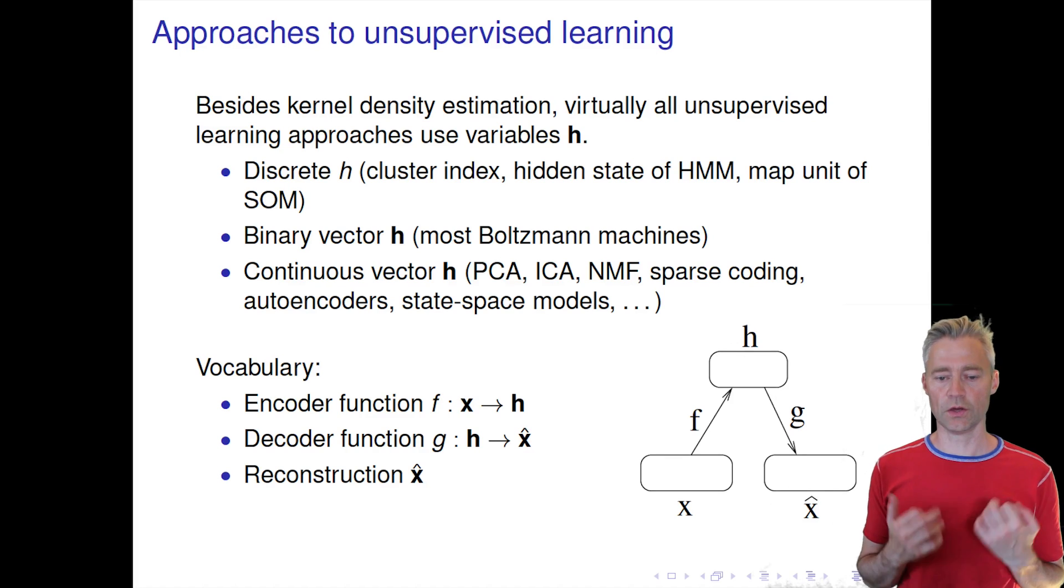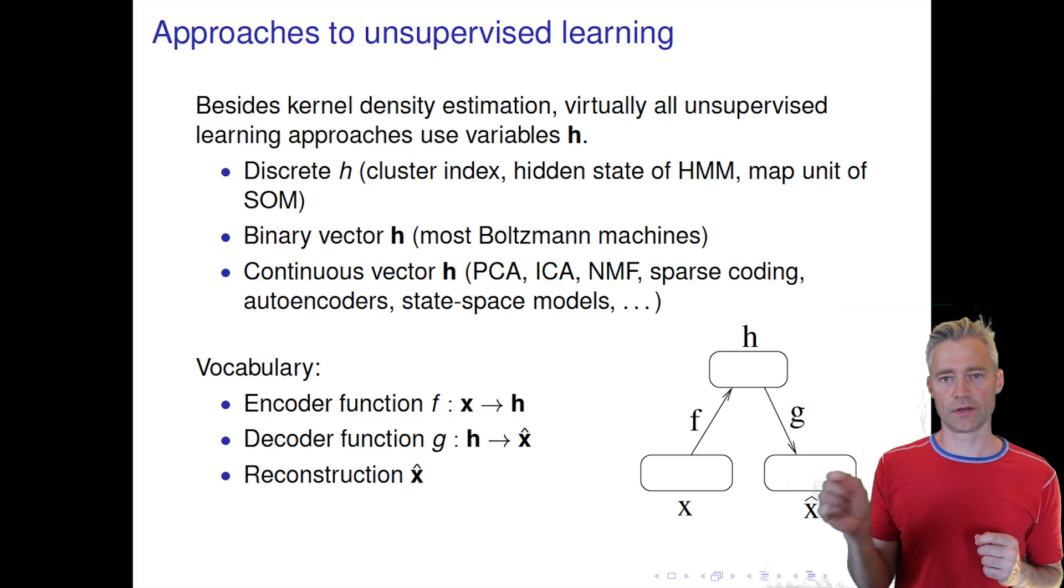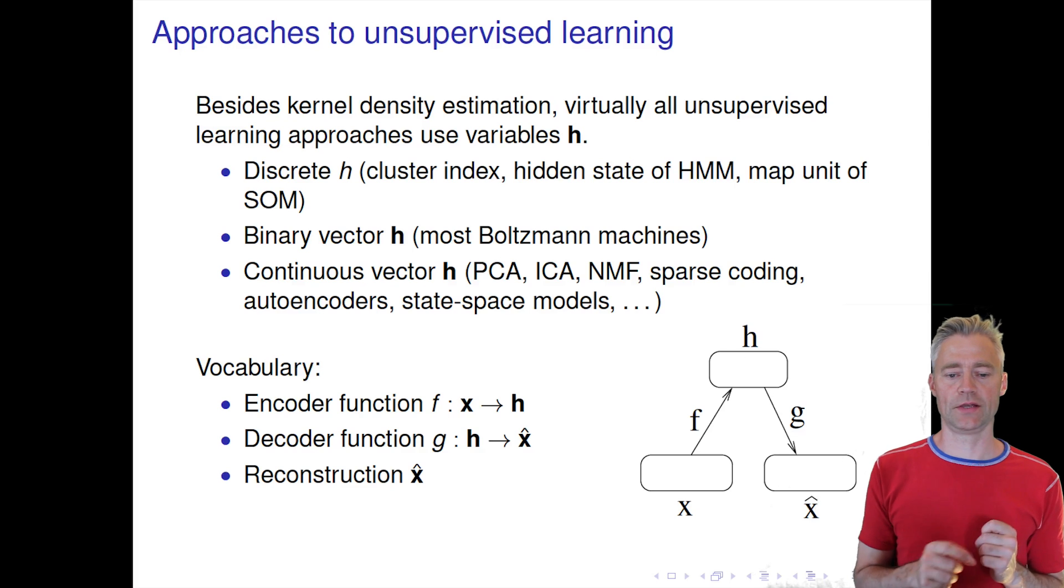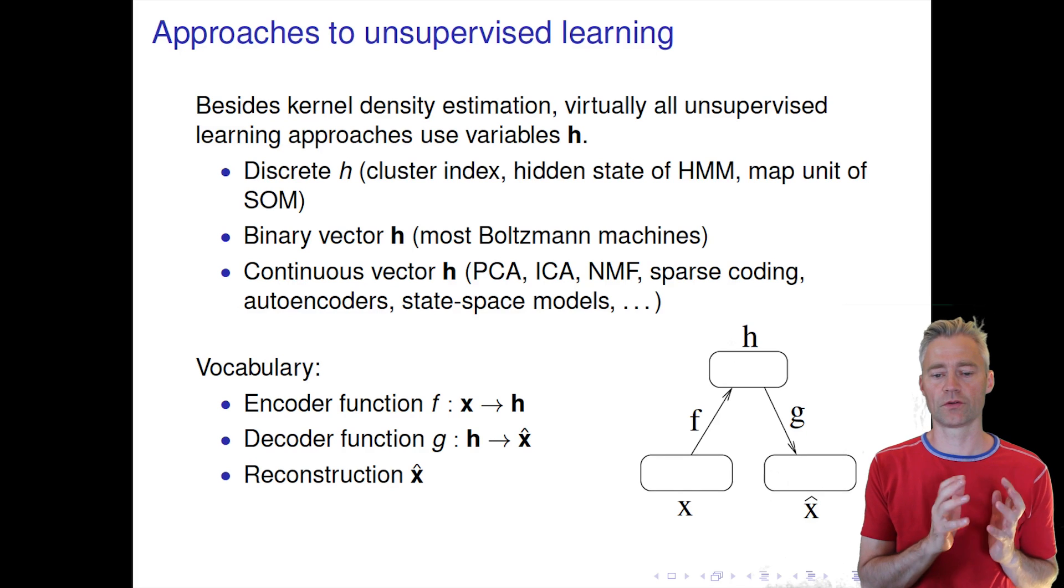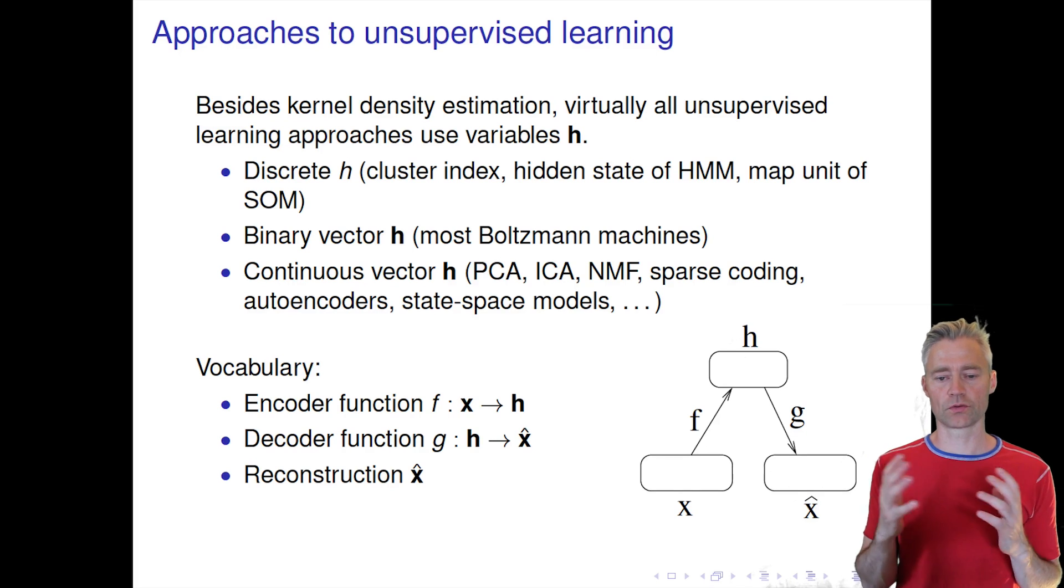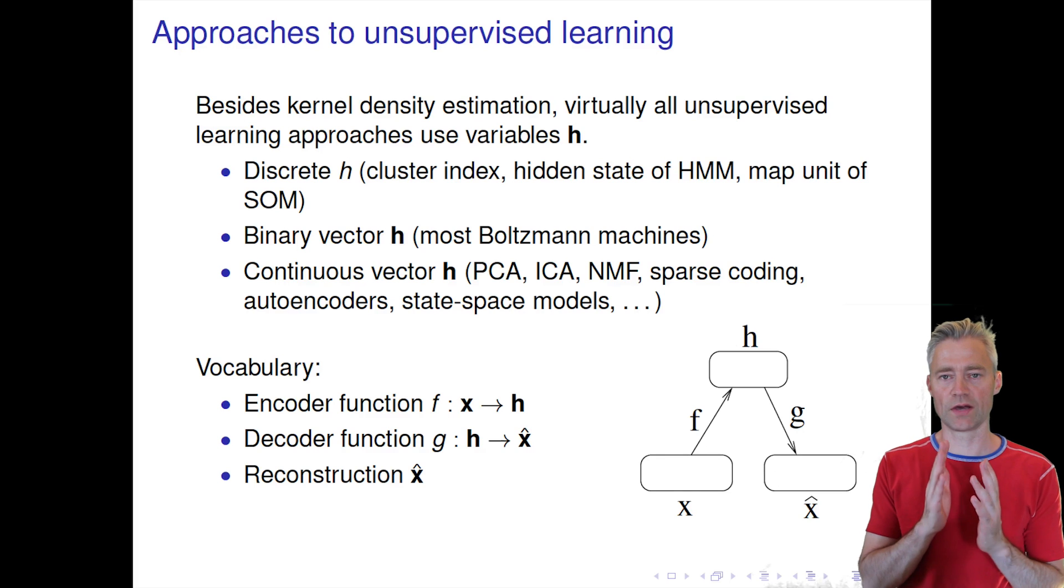If you have heard about clustering, for example, you can think about the cluster index, the cluster that one specific example belongs to, as the H. So then it's a discrete quantity. You can also think about a hidden Markov model, then you have a discrete hidden state for each time step.